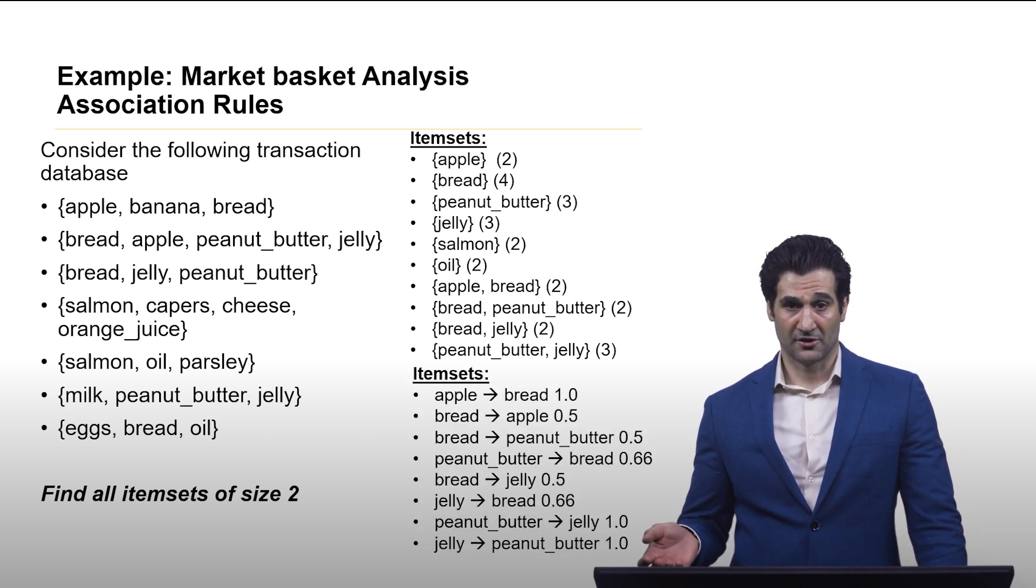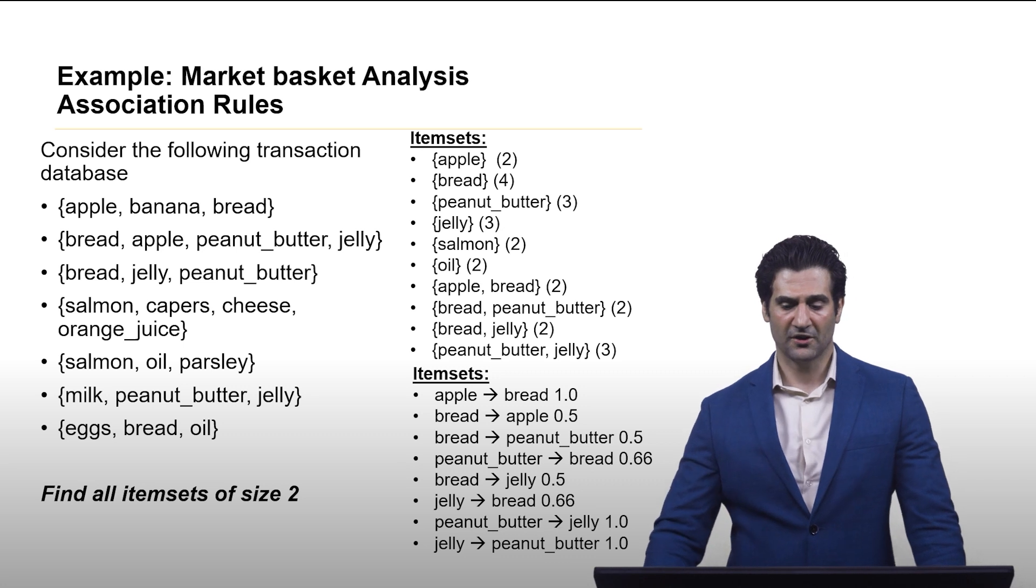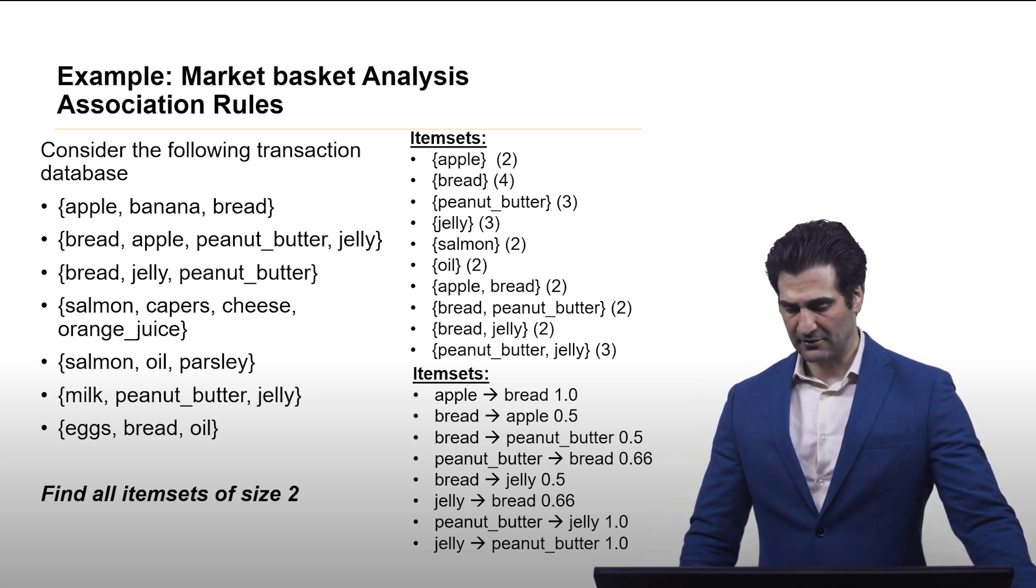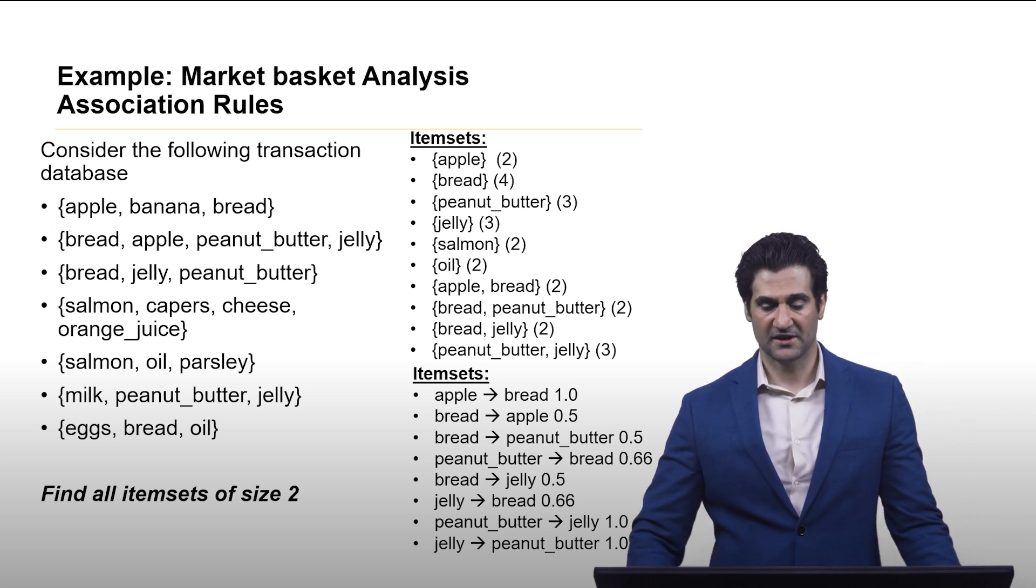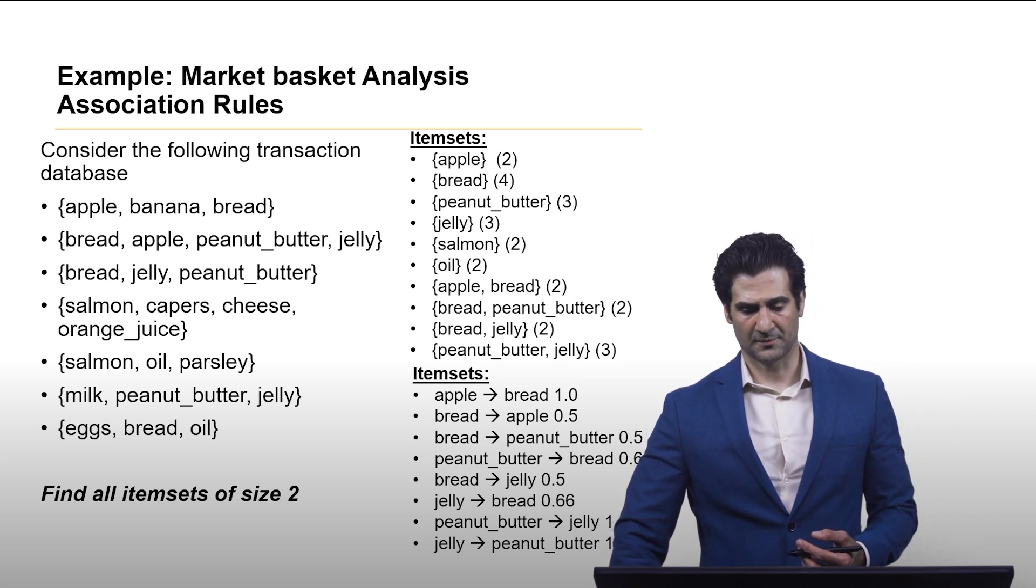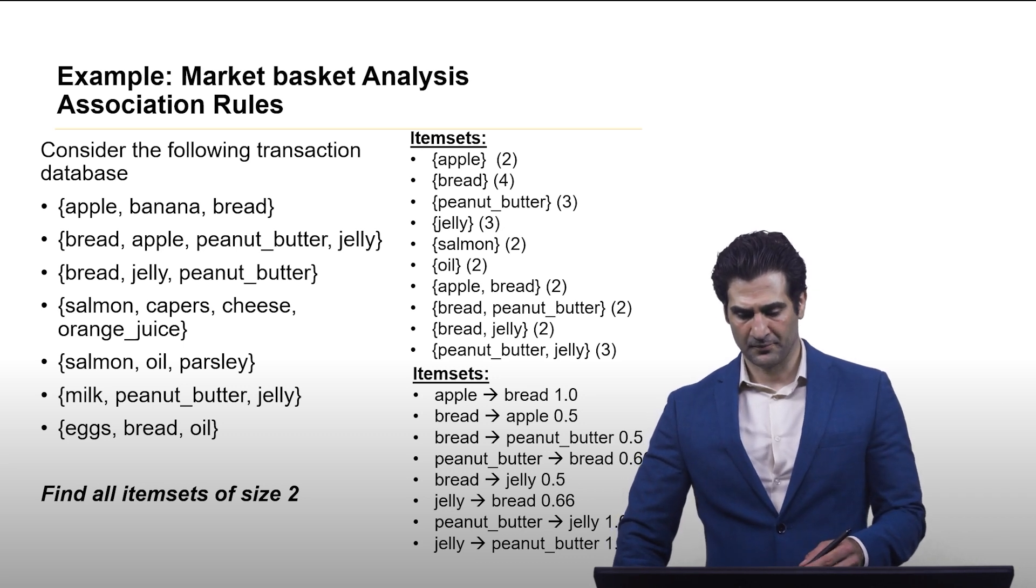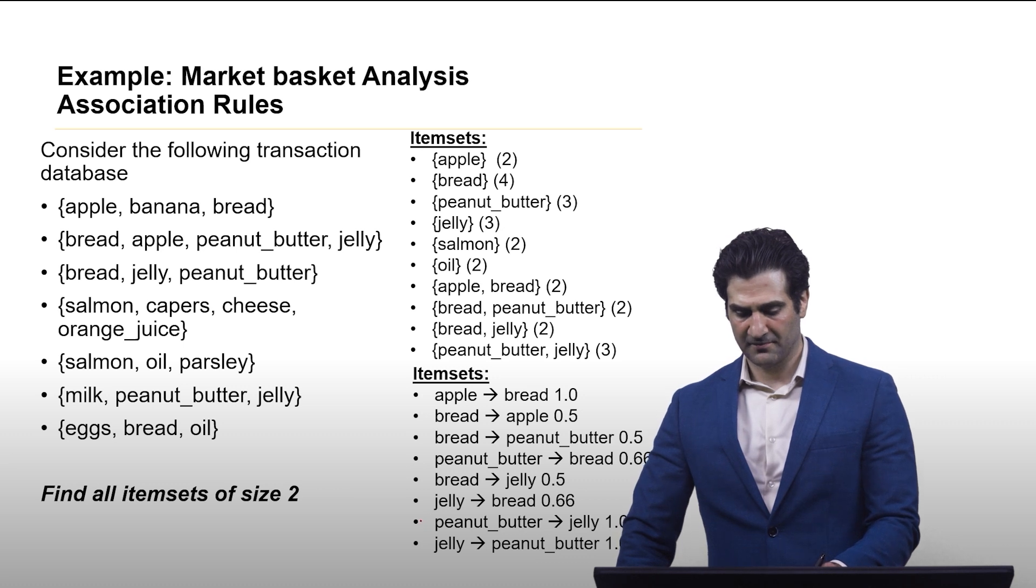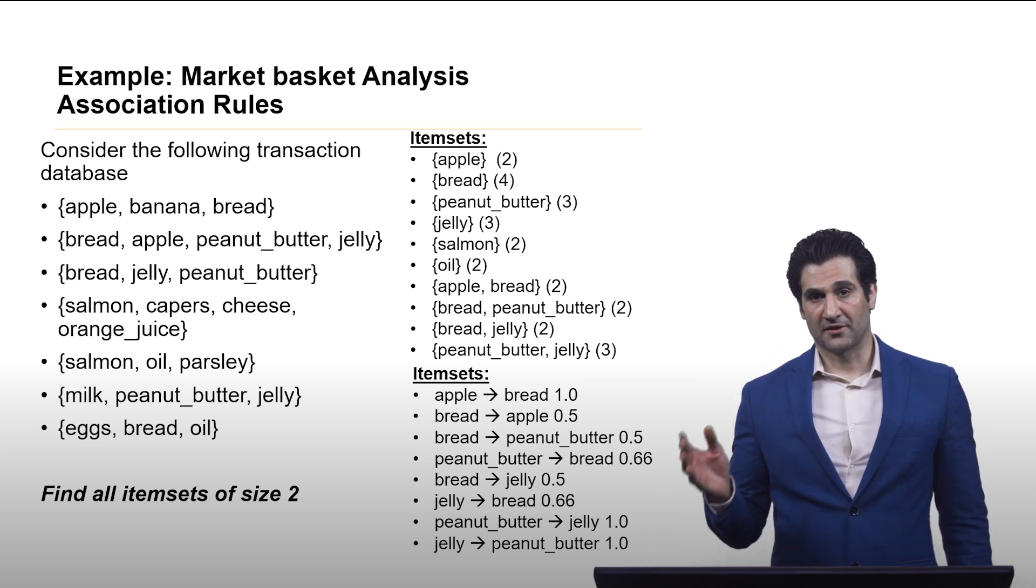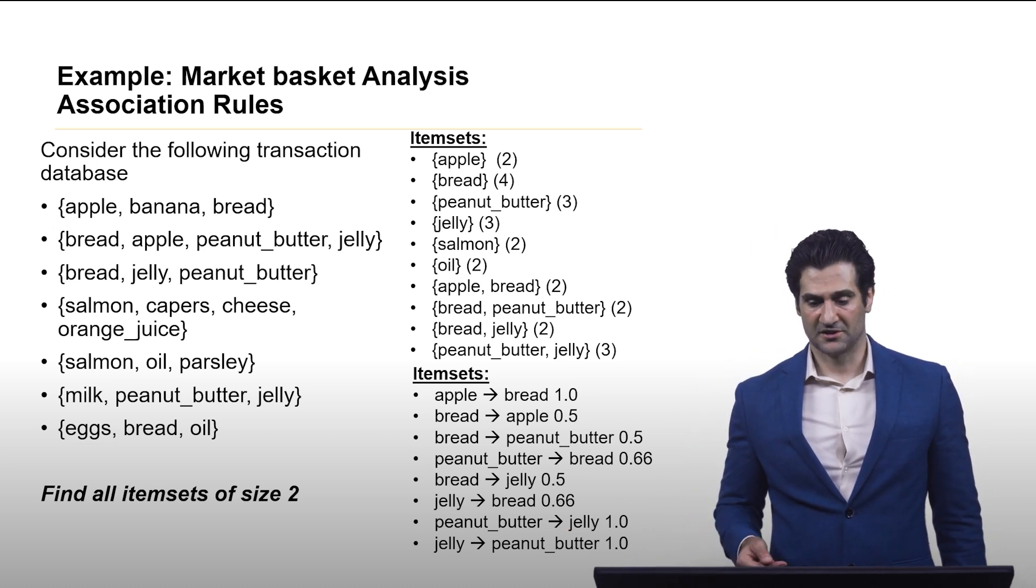Now applying what we just showed on the last slide, here are the confidence values for the rules. Now what's interesting to see is that you have interesting relationships. So for example, looking at if peanut butter, then jelly, every time someone bought peanut butter, they also bought jelly in this data set.